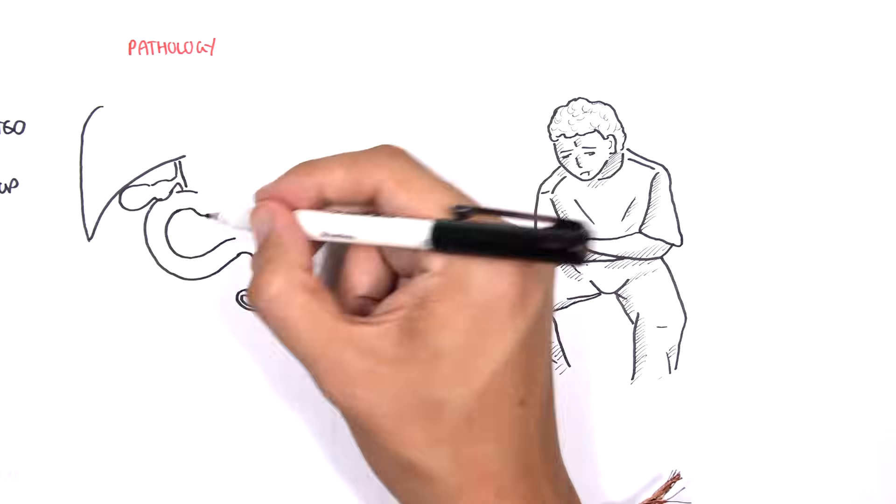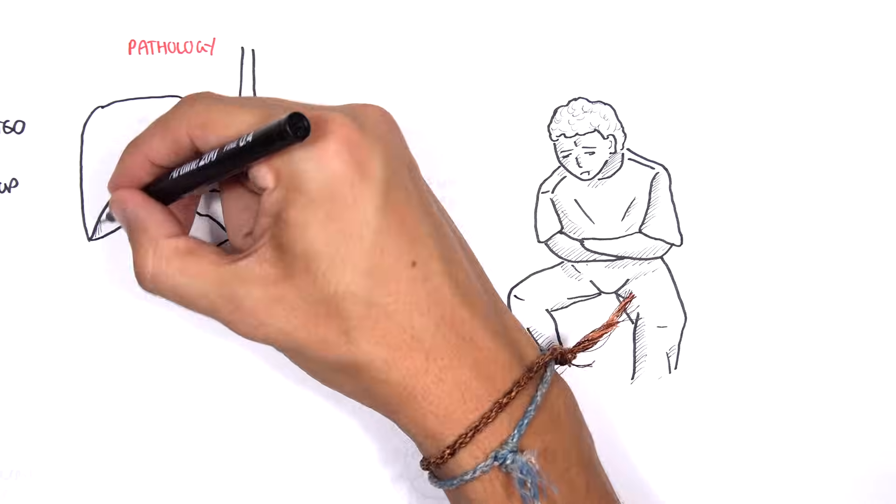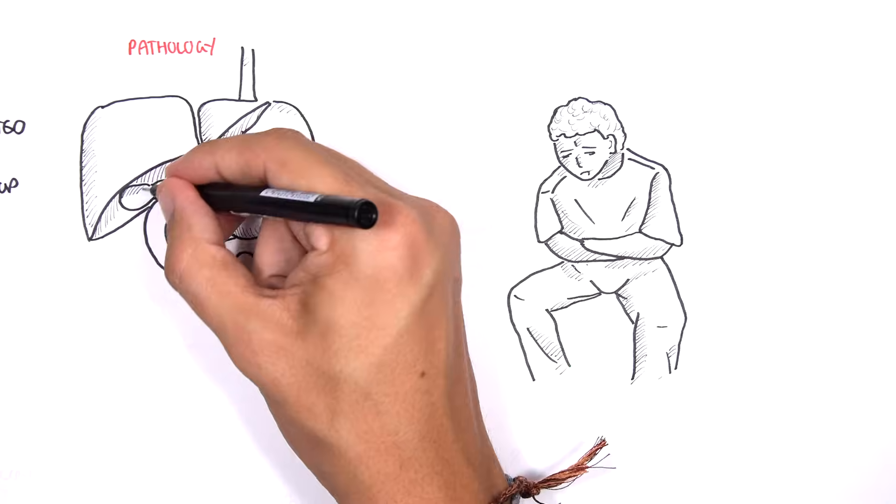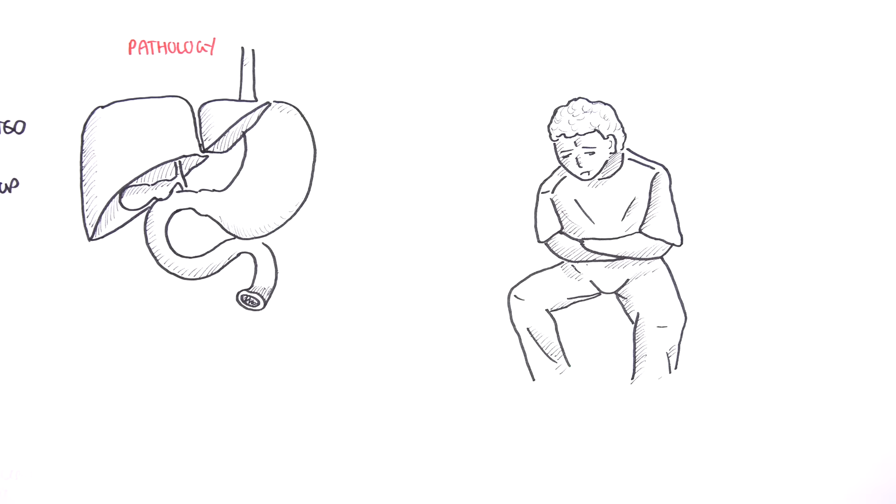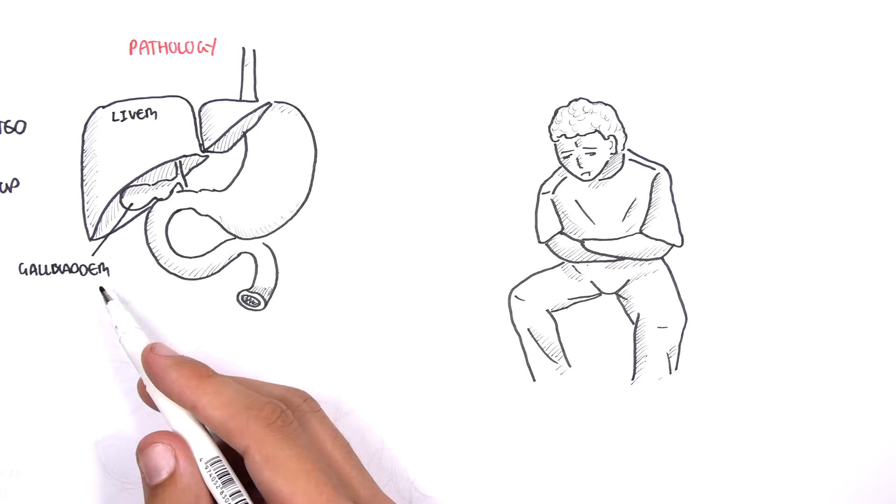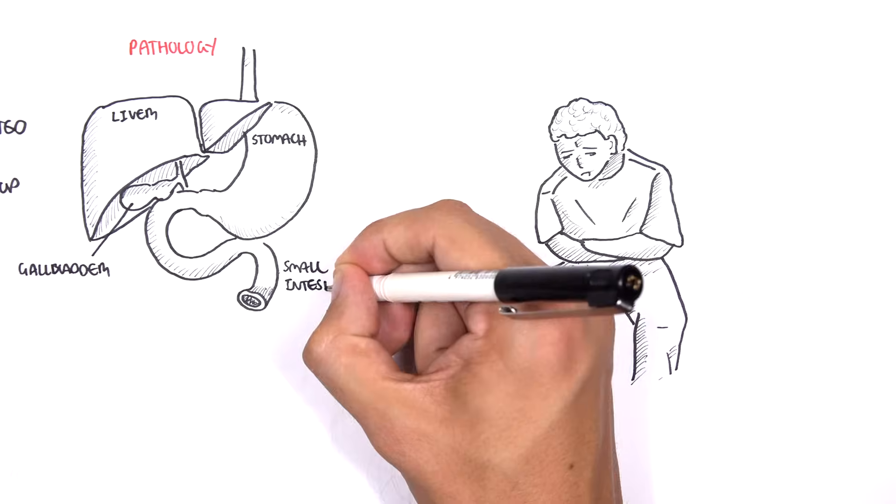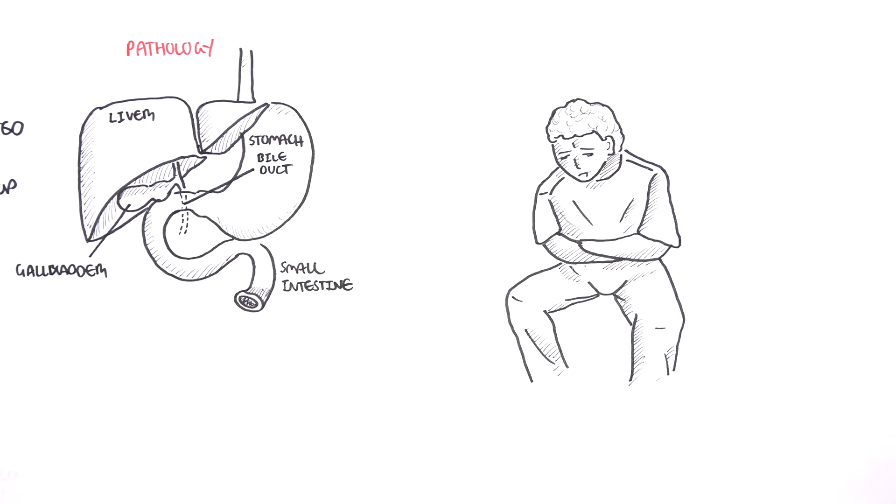What is the pancreas? Well the pancreas is an organ that sits behind the stomach, situated partly retroperitoneal. Here is the liver, gallbladder, stomach, and the small intestine. And here is the pancreas.